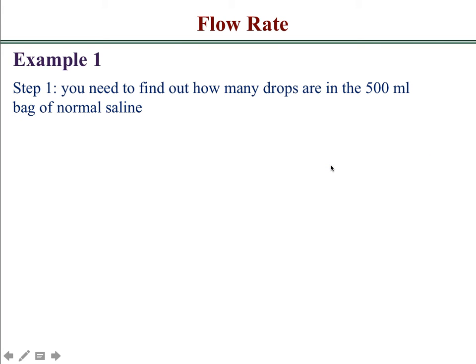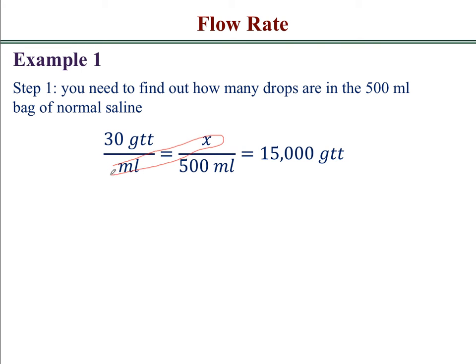For step one, you need to find out how many total drops are in the 500 ml bag of normal saline, and you can do this by setting up a proportion. Since 30 drops are in every ml, you can find out how many drops are in the 500 ml. You just want to cross multiply these two and these two, and that's how you'll get the 15,000 drops.